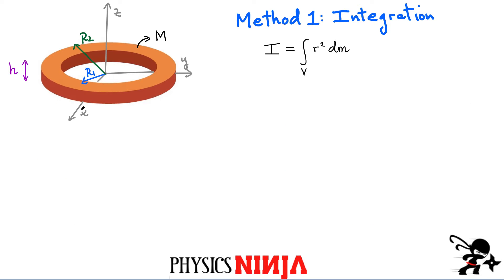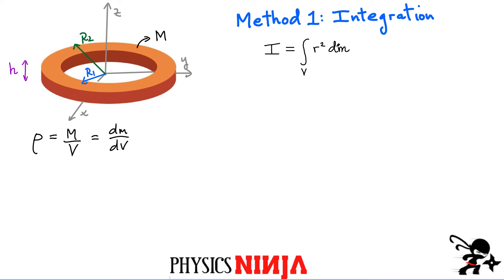The first method I'm going to use is integration. Here's the formula — I have to integrate over the entire volume, and since the density is uniform, I can write it as the total mass of the ring divided by the volume, which is also dm over dv. We're going to turn this integral into a volume integral.